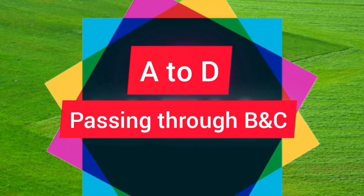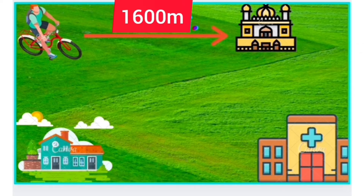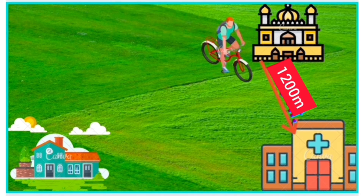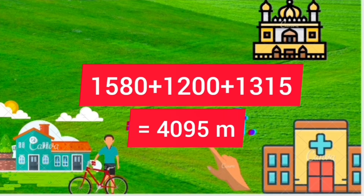Now he goes from point A to D, passing through B — that is the religious place — whose distance is 1600 meters, and then to point C, that is the hospital, whose distance is 1200 meters, and finally to his house, that is point D, whose distance is 1315 meters. The total distance traveled by Raju is obtained by adding all the distances, and the answer is 4095 meters.